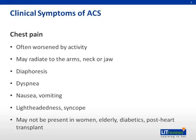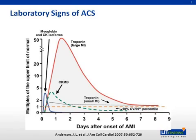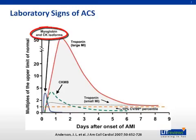Keep in mind that chest pain may not be present in women, the elderly, diabetics, and post-heart transplant patients. These patients may have so-called silent myocardial infarctions. Another cardinal sign of ACS is abnormal cardiac biomarkers — substances released into the bloodstream when there is myocardial necrosis. The most commonly monitored cardiac biomarkers are myoglobin, troponin, and creatine kinase MB, otherwise known as CKMB.